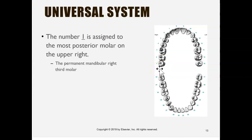Let's do a practice example. In the universal system, what tooth number is the mandibular left first molar? Mandibular means the bottom, left is this side, and the first molar is here — the second and third molars are behind it. The mandibular left first molar is number 19. We'll go over more examples like this in class.